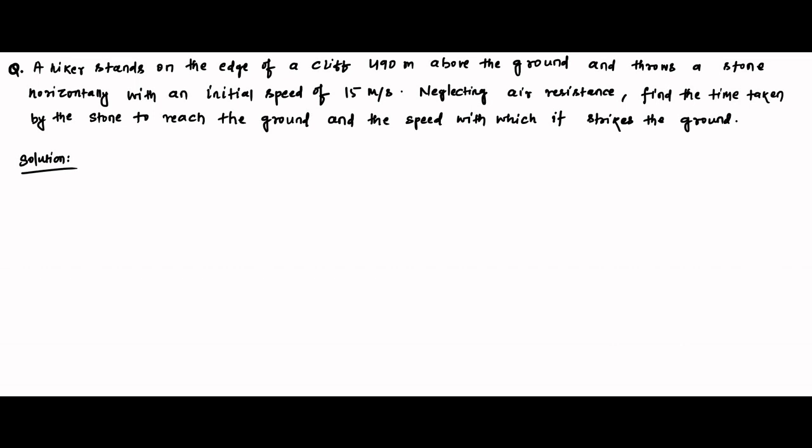Hello friends, welcome to engineering tutorial. This is another question on projectile motion with horizontal projection. The question is: a hiker stands on the edge of a cliff which is 490 meters above the ground and throws a stone horizontally with an initial speed of 15 meters per second.